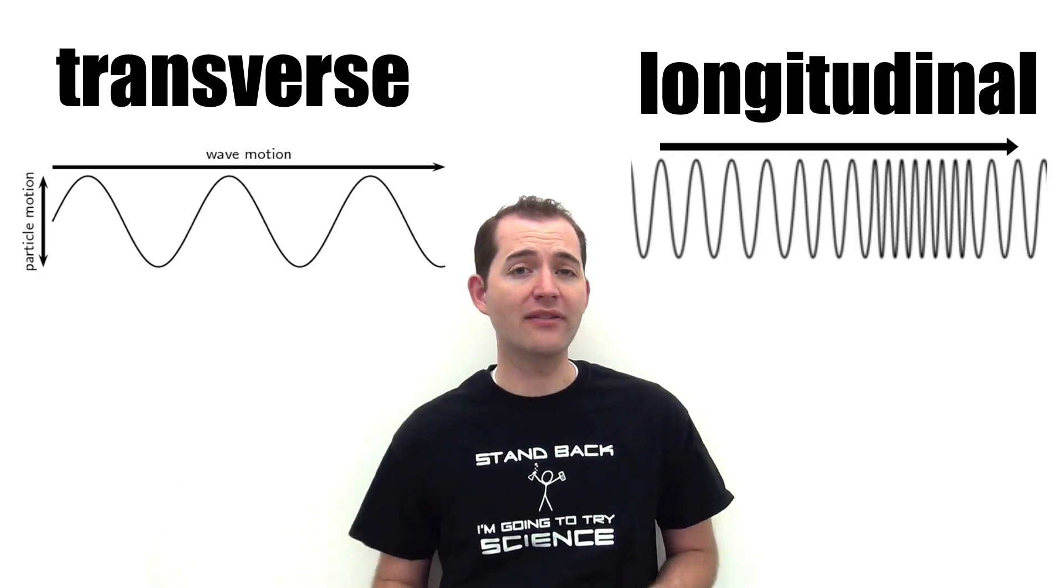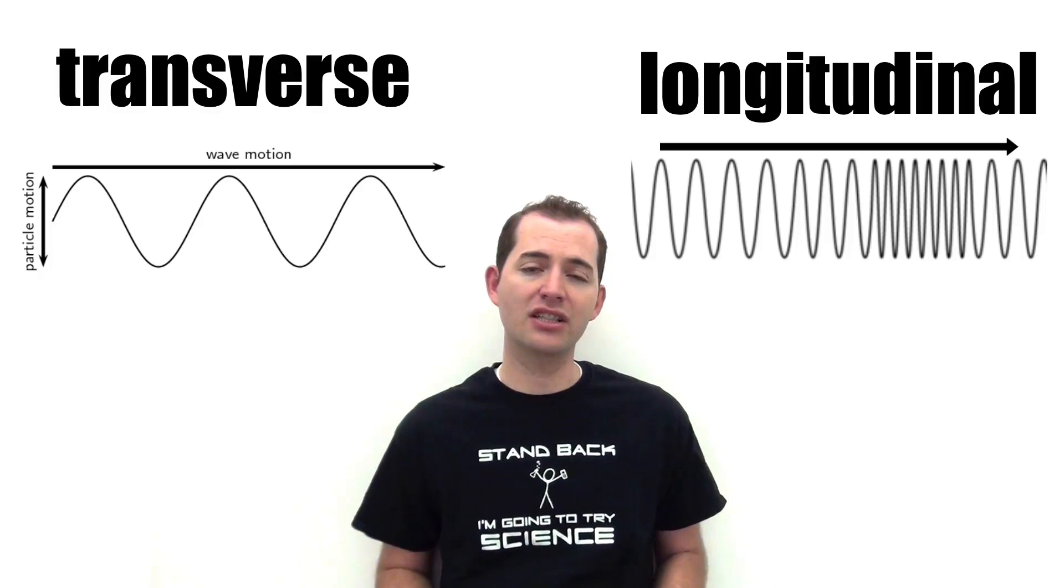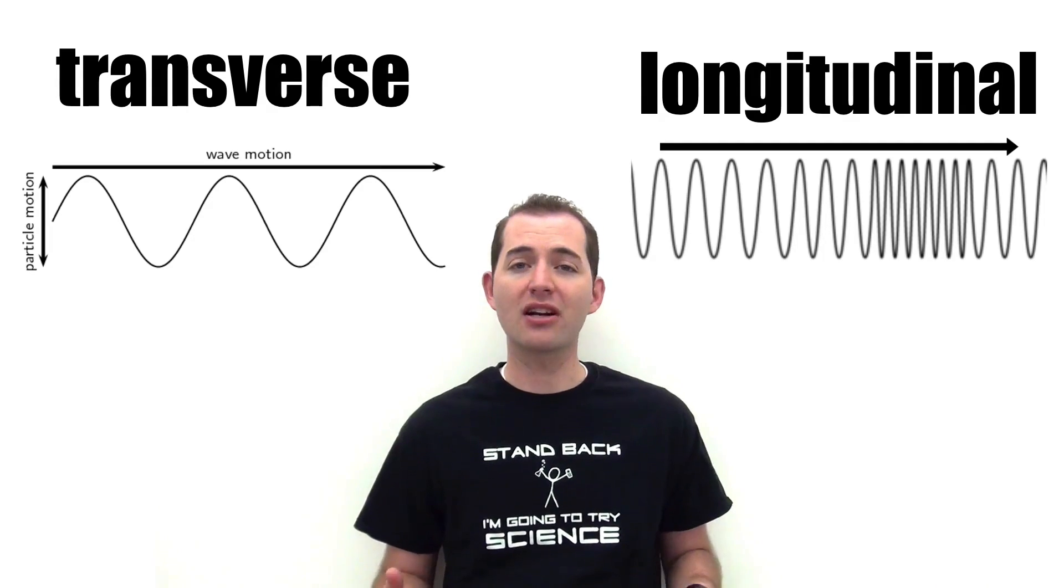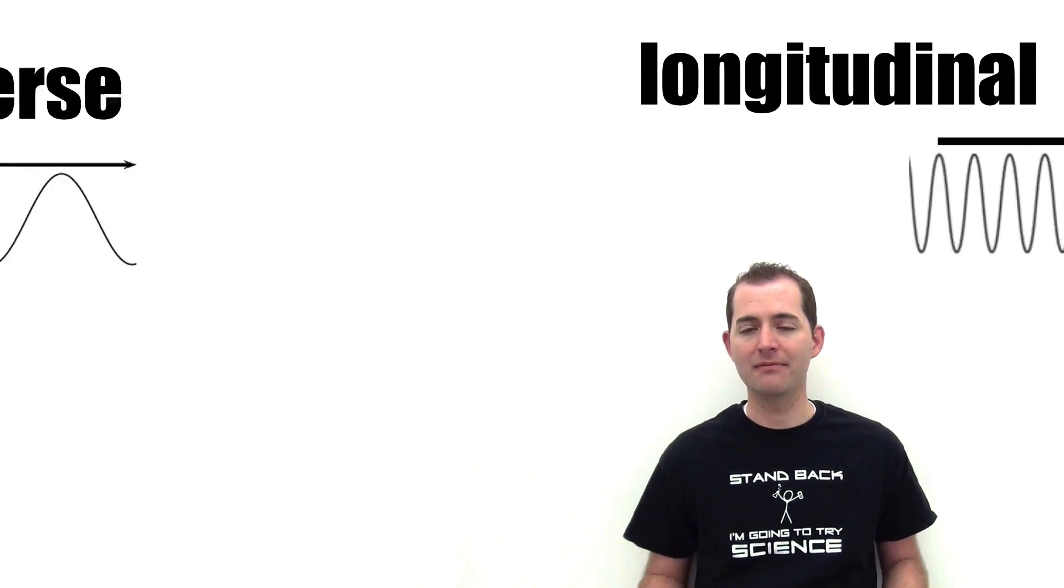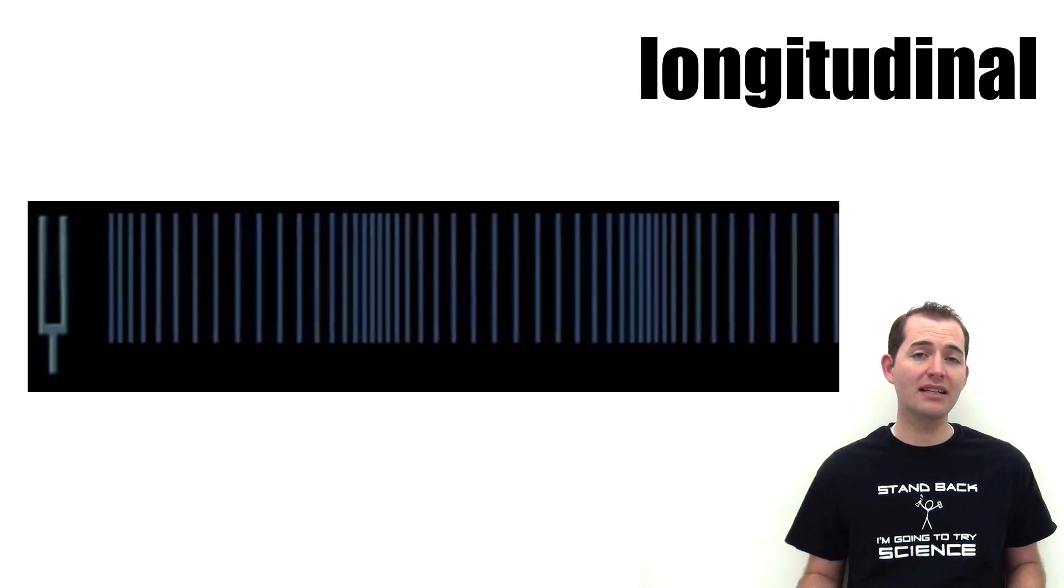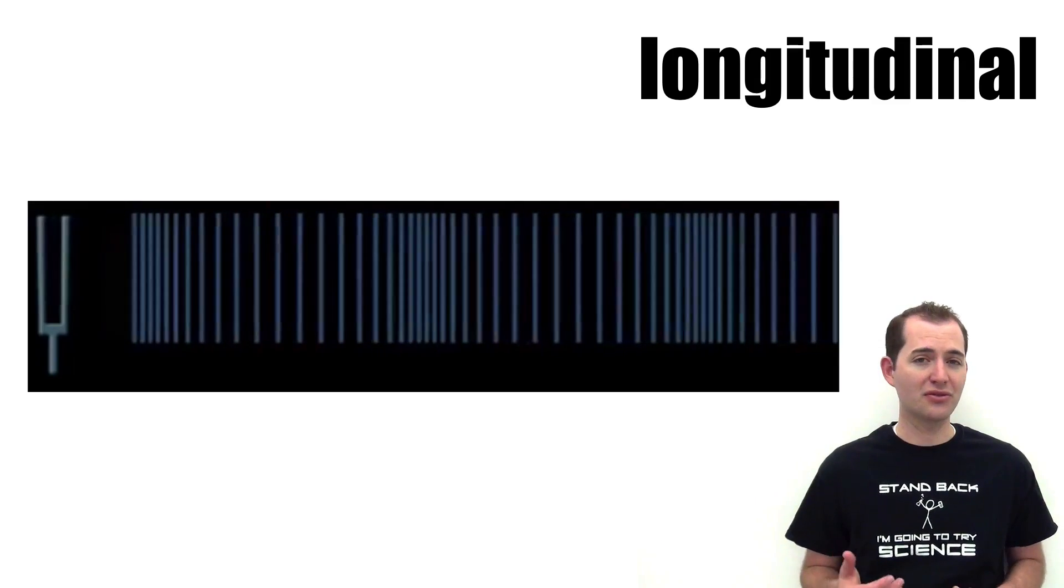A longitudinal wave is a wave where the particle's movement is in the same direction as the wave propagation. In this type of wave, the particles are compressed and decompressed as the wave passes by them. Sound is a longitudinal wave, and the particles in the air are compressed and decompressed as the energy of the sound wave moves through them.